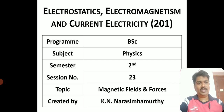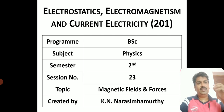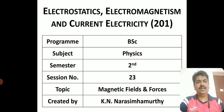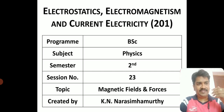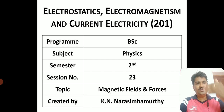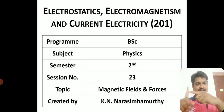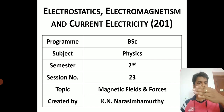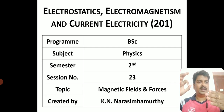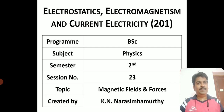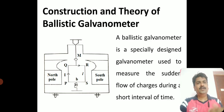In my previous video, I derived the expression for the torque acting on a current-carrying coil placed in a magnetic field. A current-carrying conductor experiences a force due to the magnetic field — the mechanical effect of electric current. A coil placed in a magnetic field experiences a torque and tends to rotate. Working on this same principle is the ballistic galvanometer.